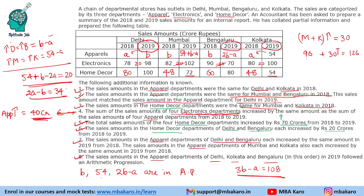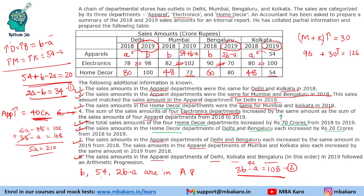Now we solve the two equations: equation 1 is 2A minus B equals 34, and equation 2 is 3B minus A equals 108. Multiplying equation 1 by 3 gives 6A minus 3B equals 102. Adding this to equation 2 gives 5A equals 210, so A equals 42. Substituting back: 3B minus 42 equals 108, so 3B equals 150, meaning B equals 50. We verify: 2 times 42 is 84, minus 50 is 34. Confirmed — A is 42 and B is 50.